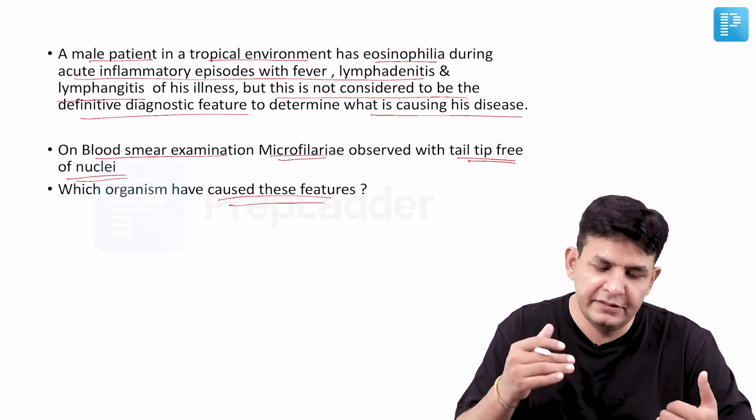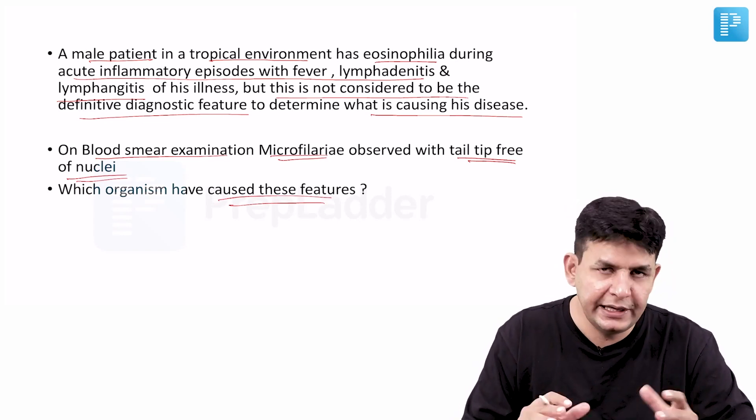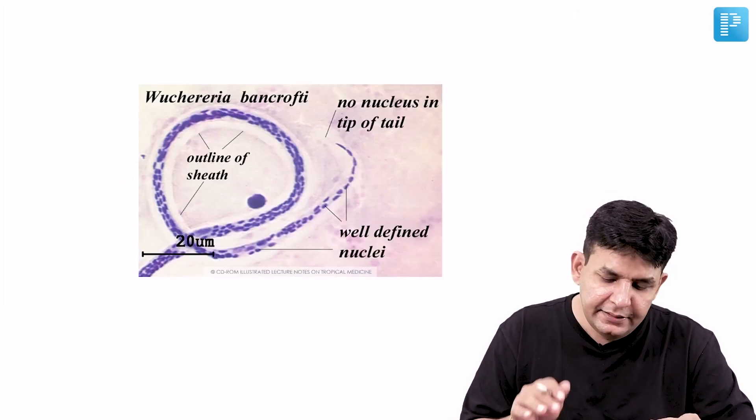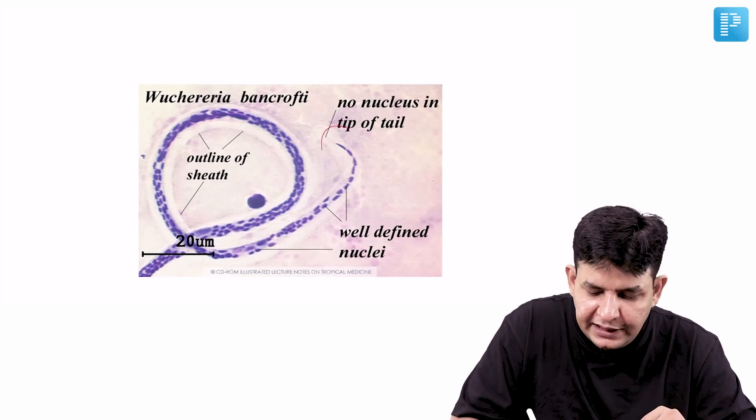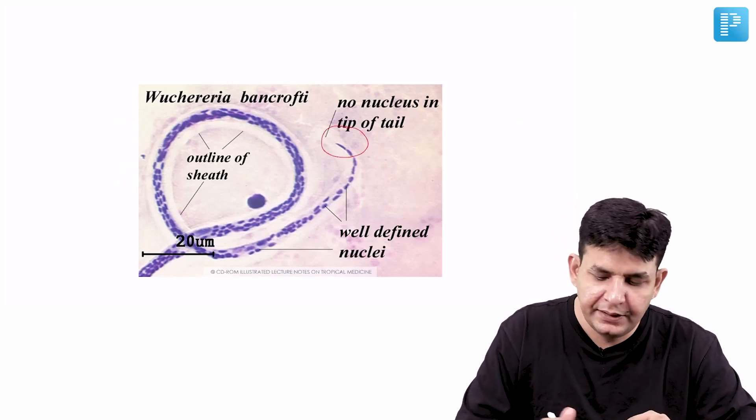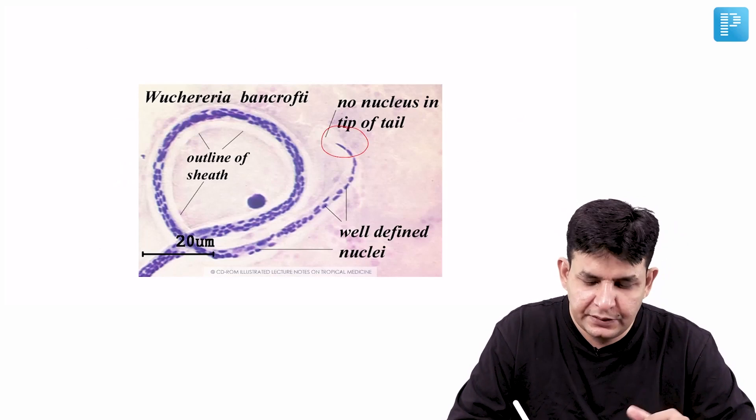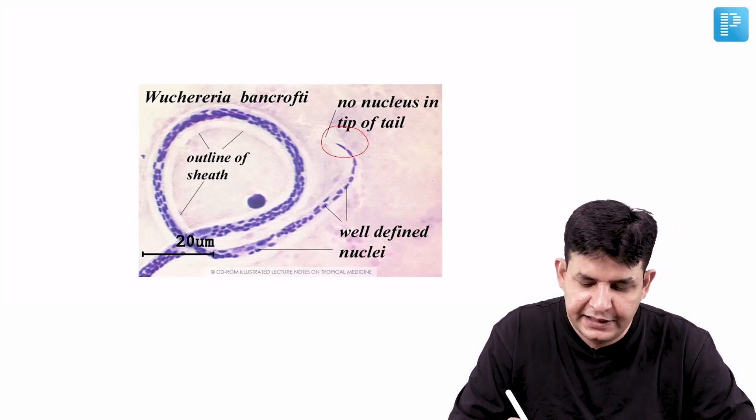Obviously fever, lymphadenitis, lymphangitis are all features of acute filariasis. They have shown this particular picture that the tail tip is free of nuclei, and that is a typical feature of Wuchereria bancrofti, elephantiasis.